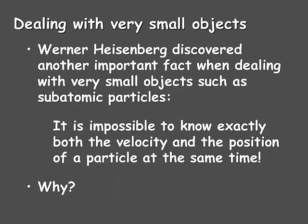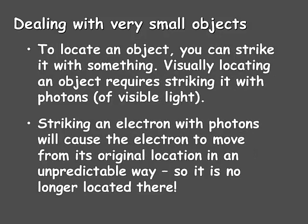Werner Heisenberg discovered another important fact when dealing with very small objects, such as subatomic particles. It is impossible to know exactly both the velocity and the position of a particle at the same time. The reason is that to locate an object, you can strike it with something. Visually, locating an object requires striking it with photons of visible light. Striking an electron with photons will cause the electron to move from its original location in some unpredictable way, so it's no longer located there.